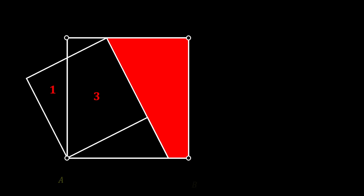First, for better understanding, let's mark all the vertices of the big square as A, B, C, and D, and let's also mark the vertices of the smaller square as E, F, and G. Now we can also mark the point of intersection between the two squares as P, and the point of intersection between the extension line and the bottom side of the big square as Q.